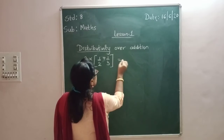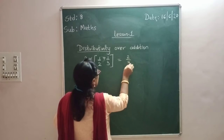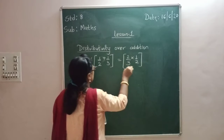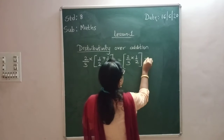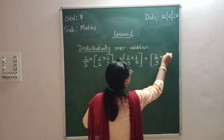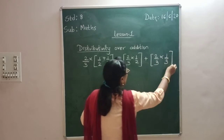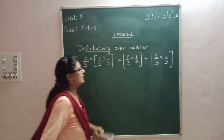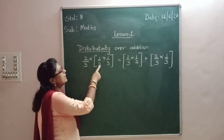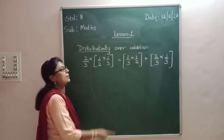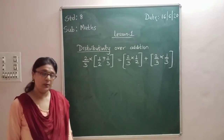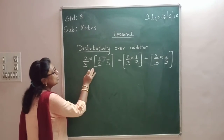Then that will give me 2/3 multiplied by 1/2, plus 2/3 multiplied by 1/3 — like this way. That means 2/3 will get distributed with each number, with the addition sign in between. Now let us solve this.